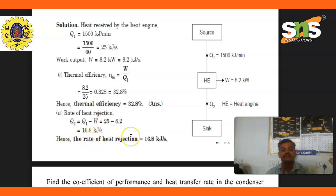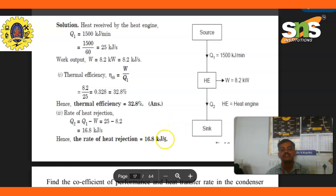The rate of heat rejection: Q2 equals Q1 minus W equals 25 minus 8.2 equals 16.8 kilojoules per second.